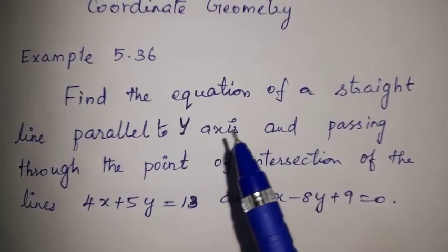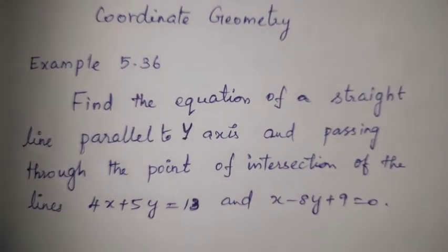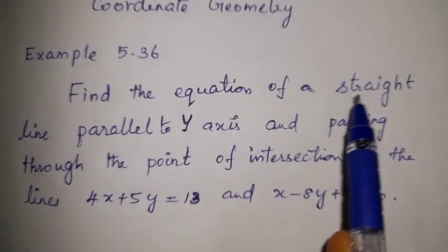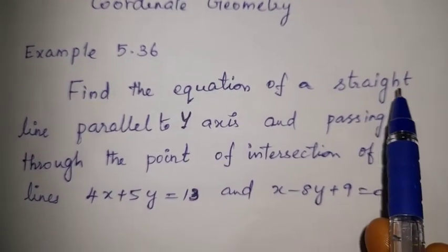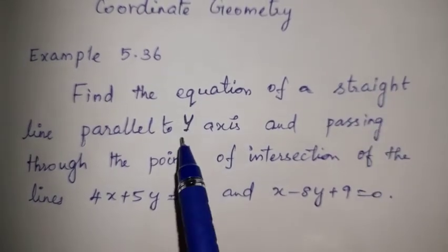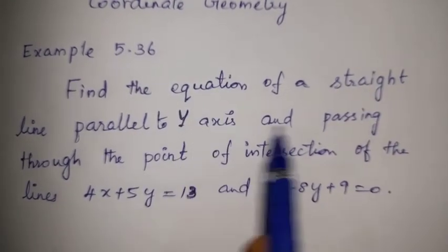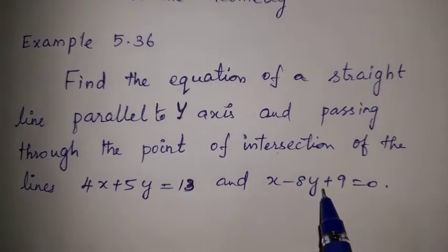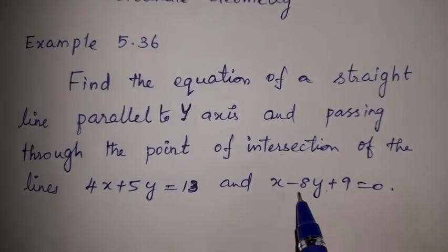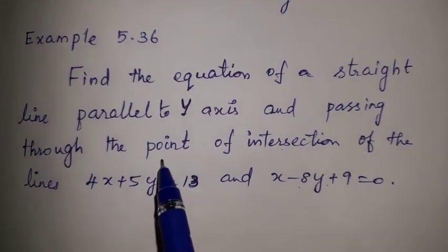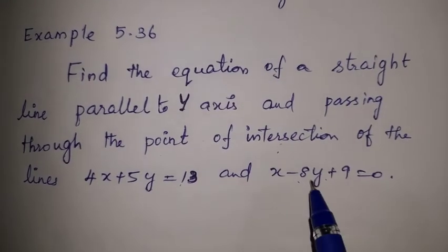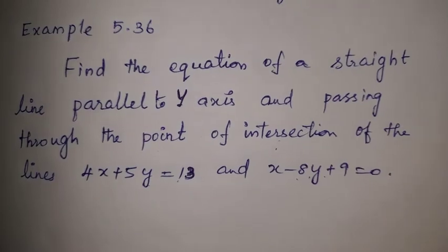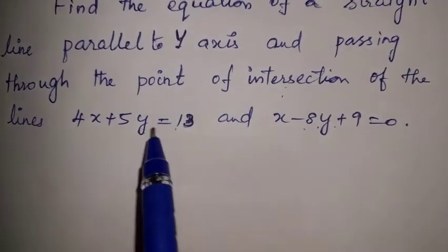So, let's say the equation of a straight line parallel to the y-axis. The first hint is that the equation is a straight line parallel to the y-axis, and it is passing through the point of intersection of the two given line equations. In the two lines, what point is intersecting? That is the point of intersection — we have to find that point.